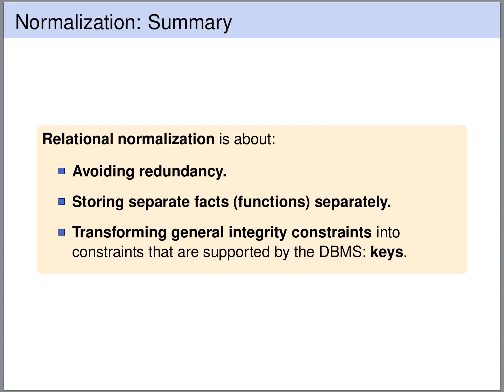To briefly summarize the goals of database normalization: we want to avoid redundant storage of information. We want to store facts about different concepts in different tables — separate facts in separate tables. We want to transform integrity constraints into constraints that can be enforced by the database management system, specifically transforming functional dependencies and multivalued dependencies into key constraints.